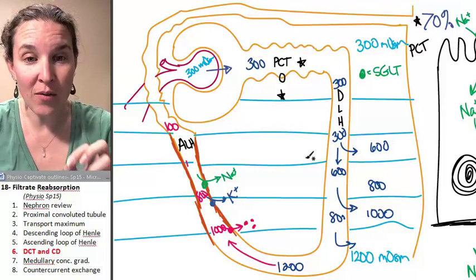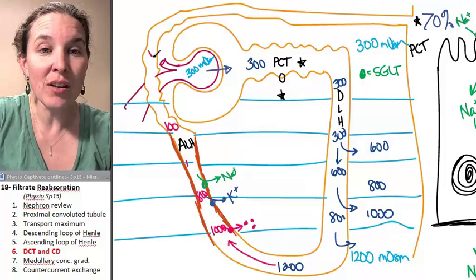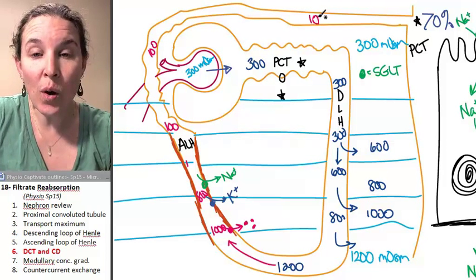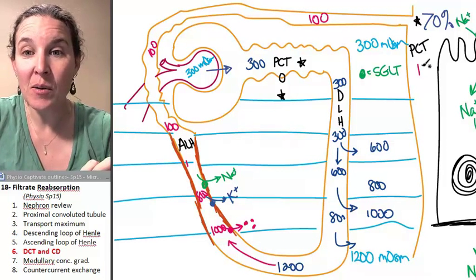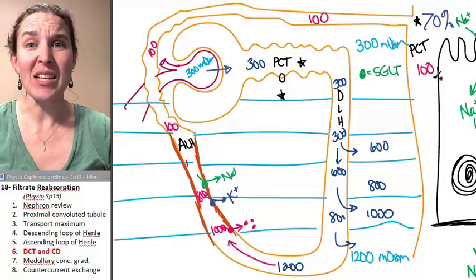The take home that I want you to have right now is that filtrate can enter this zone as low as 100 milliosmoles. What that means is that that's super dilute.